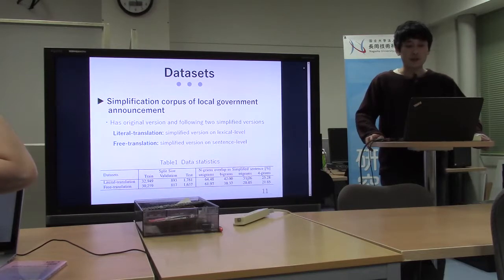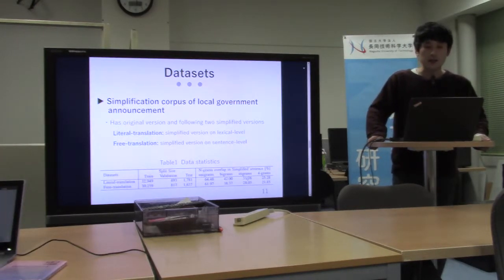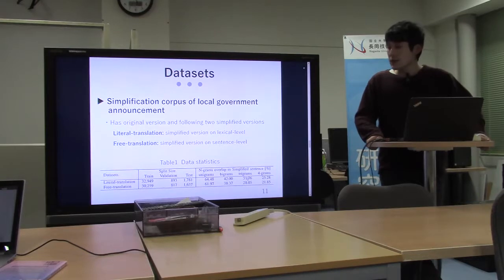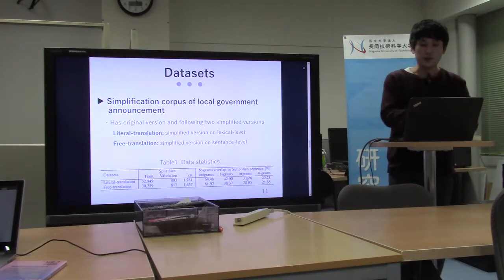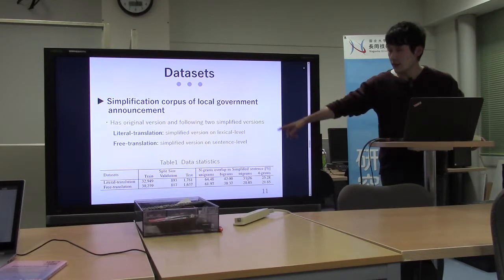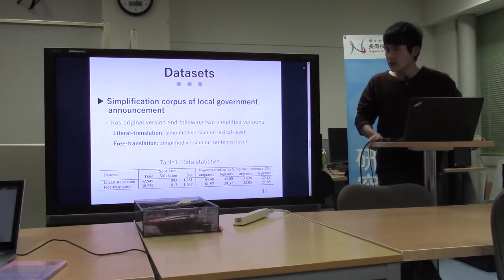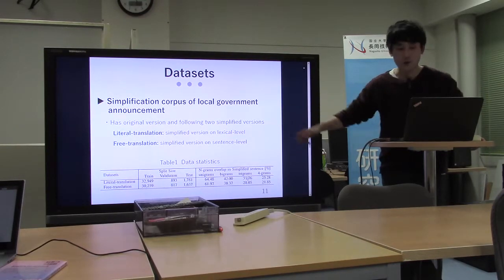It has the original version and the following 2 simplified versions. The first, literal translation, is the simplified version on the lexical level and has many paraphrasing operations. Free translation is a simplified version on the sentence level. It has various simplification operations such as paraphrasing, sentence compression, sentence splitting, and word reordering. These are different simplification corpora. We tried to translate from the original sentence to each simplified version.